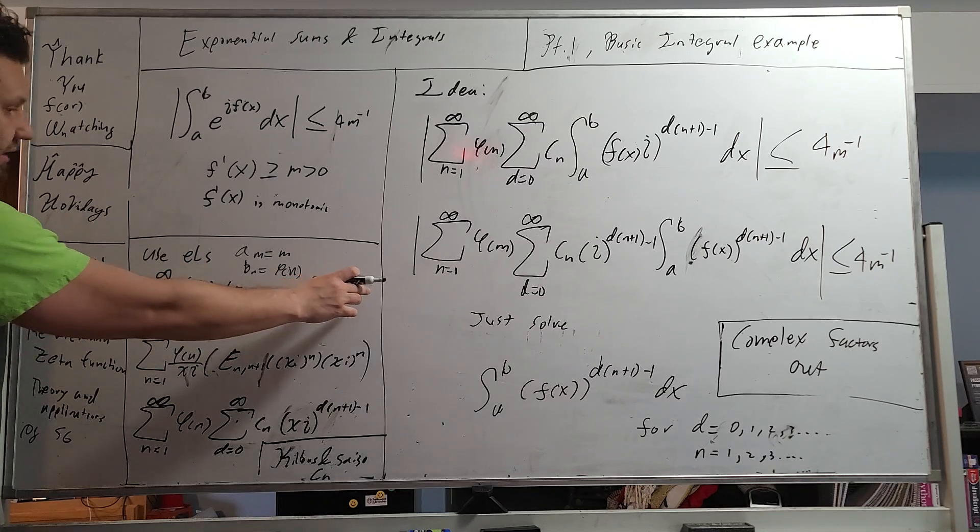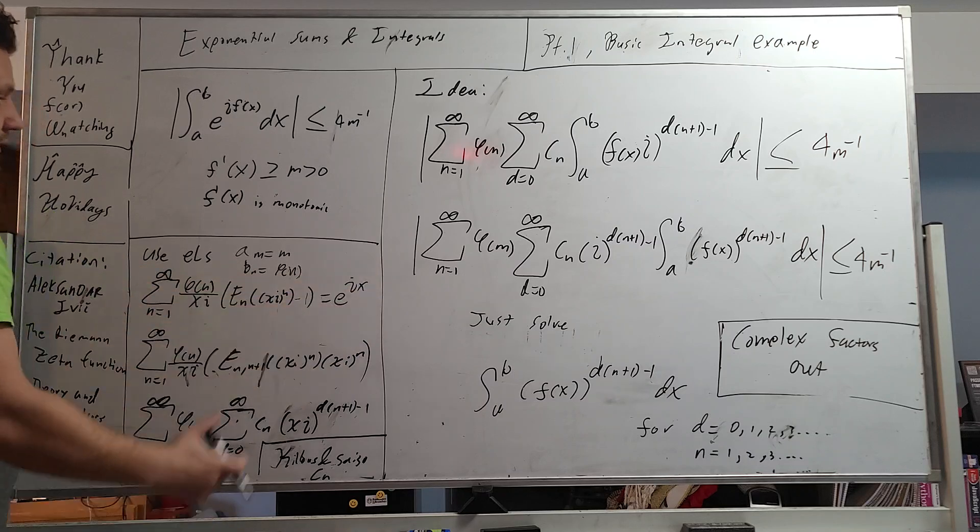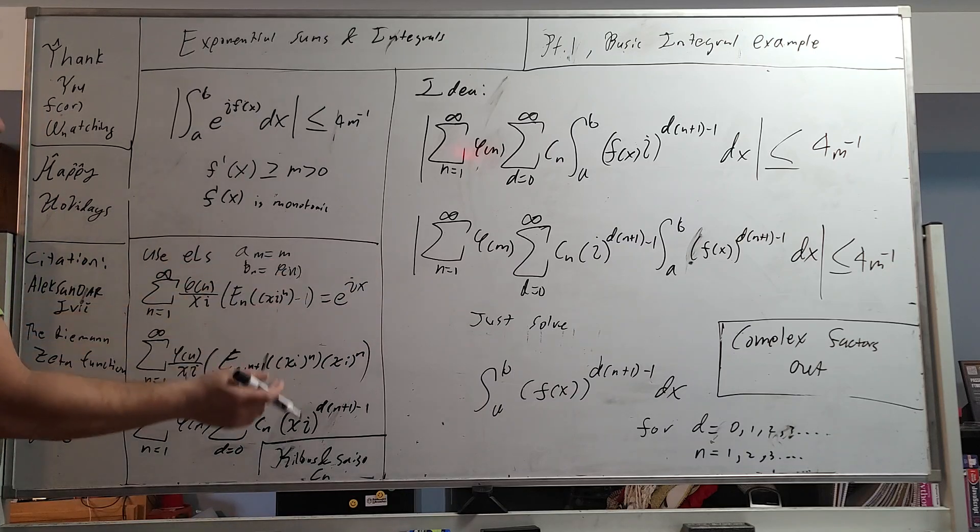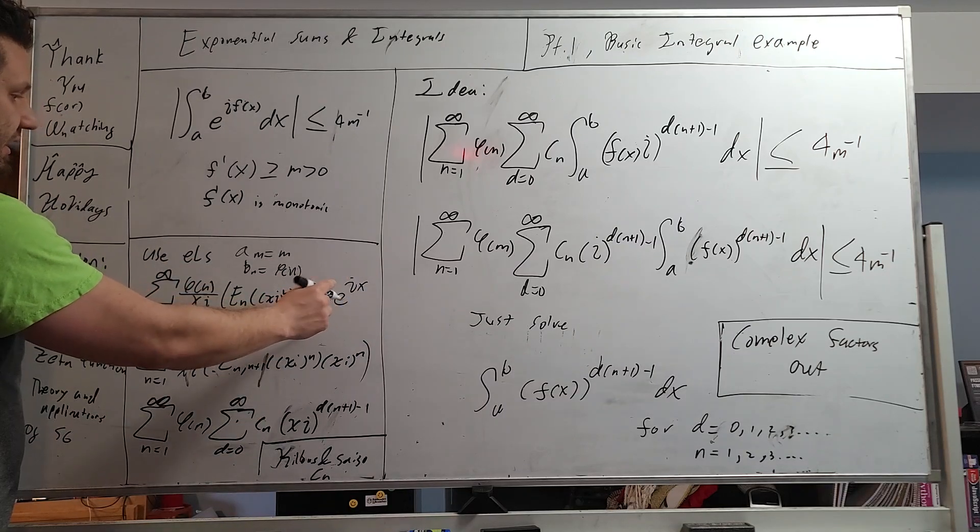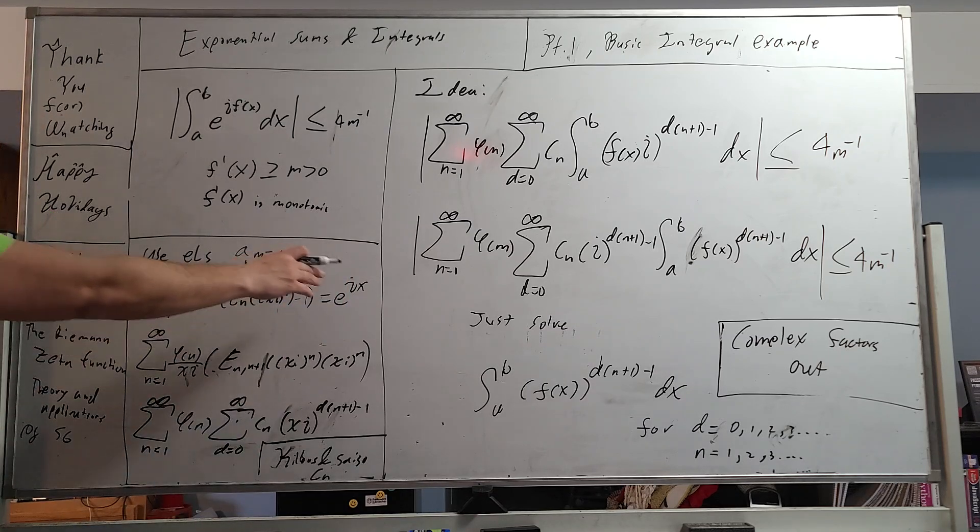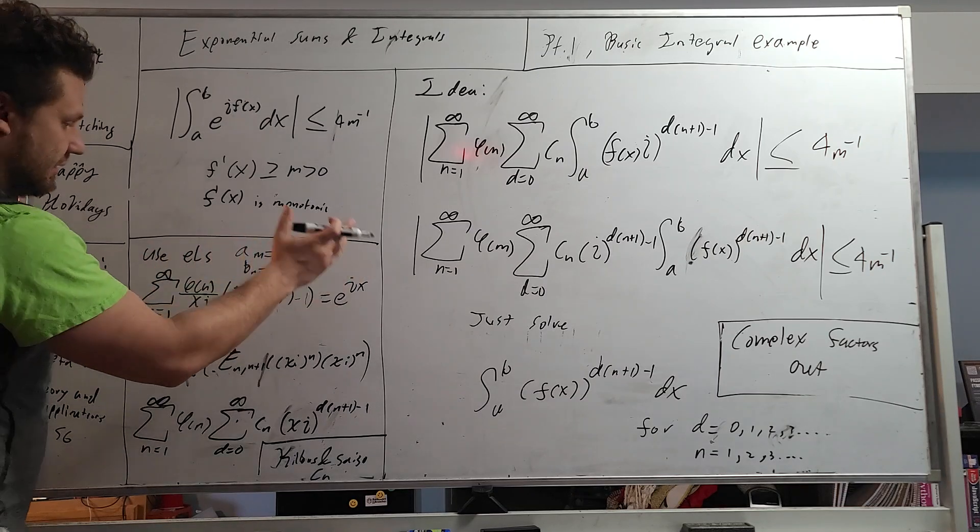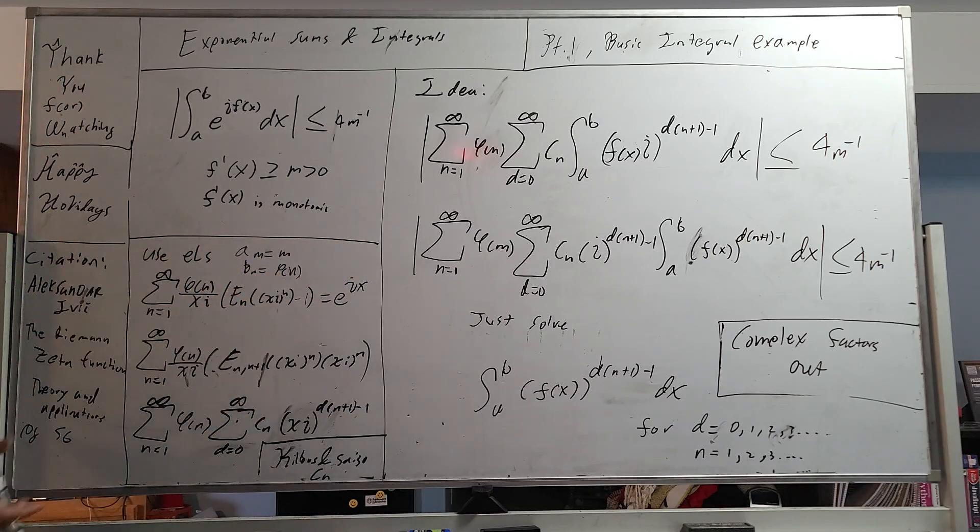Obviously, b sub n is right there. a sub m would be on this side right here, a sum divided by m factorial. And that all becomes x e to the x, and so we just bring the x to the other side, and then we plug in i on all the x's, and we get our very nice e to the i x.